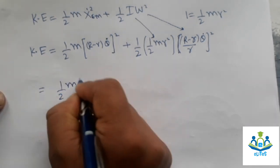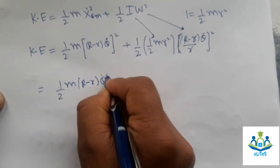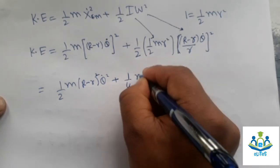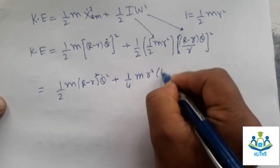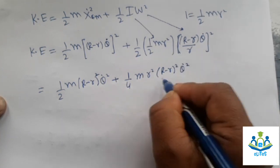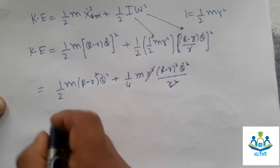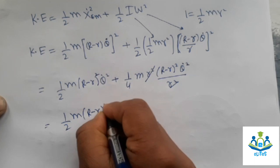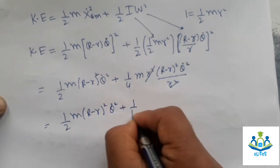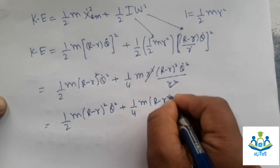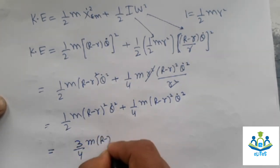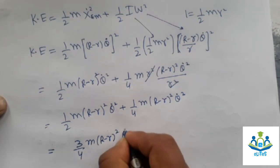Substituting x-dot equals (R minus r)theta-dot and I equals one-half mr-squared: the translational KE is one-half m(R minus r)squared theta-dot-squared, and the rotational KE is one-quarter m(R minus r)squared theta-dot-squared (the r-squared cancels). Adding them gives total KE equals three-quarters m(R minus r)squared theta-dot-squared.